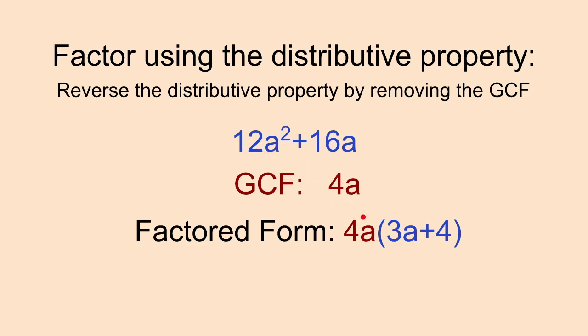I would need to multiply 4a by 3a to get 12a². And then what would I need to multiply 4a by in order to get 16a? I would need to multiply by 4. So 4a times 4 would get me back to this 16a. And this again is what we call that factored form.